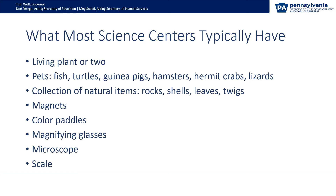Some of the more unique ideas I've seen are ghost shrimp or sheep as pets. Natural items might include fossils, and miscellaneous items like bird nests, wood pieces, honeycombs, driftwood, nuts, and pods.